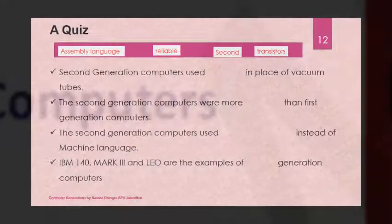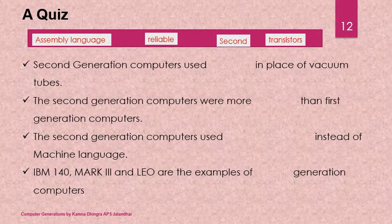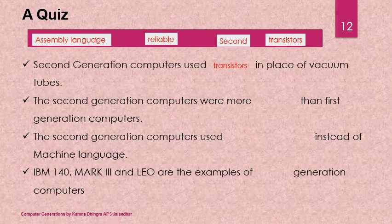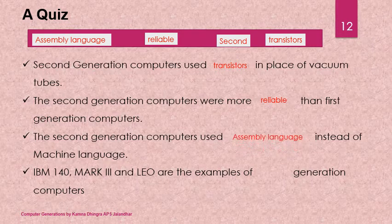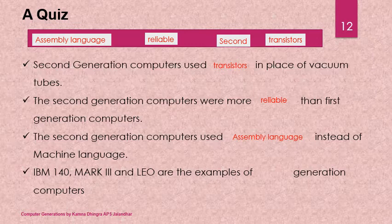However, second generation computers still produced a lot of heat, speed was still slow, and memory was less. Quiz recap: Second generation computers make use of transistors in place of vacuum tubes, use assembly language instead of machine language, and are more reliable. Examples include IBM 1401, Mark III, etc.